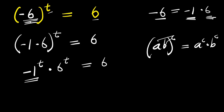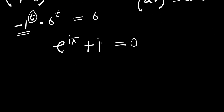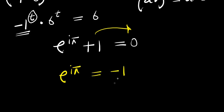Now look at this: we have negative 1 to the power of t. We can make use of Euler's identity: e to the power of i times pi plus 1 equals 0. From here, we get e^(iπ) equals negative 1. Since we have negative 1 here, we can replace it with e^(iπ).